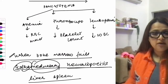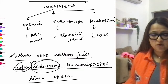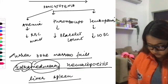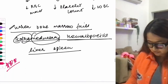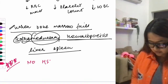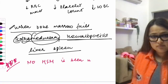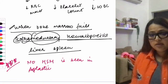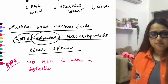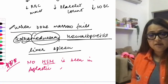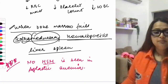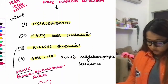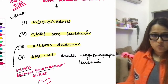No hepatosplenomegaly is seen in aplastic anemia, even though the bone marrow is failing. This is a deviation from the normal compensatory response. These are the conditions that yield a dry tap on bone marrow aspiration.